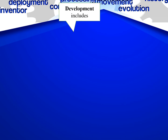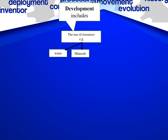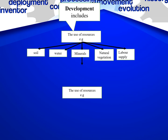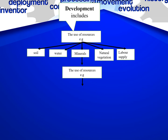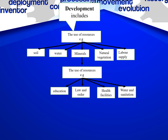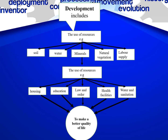Development includes the use of resources such as minerals, water, natural vegetation, soil, and labor supply. The uses of these resources include law and order, health facilities, education, water and sanitation, and housing. We need all of these to supply and create a better quality of life. That is why this development chart and these resources are very important.